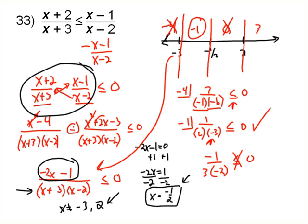And then we try 3. Negative 2 times 3 is negative 6. So you get negative 7 on top. 3 plus 3 is 6 on bottom. 3 minus 2 is 1 on bottom. So you've got a negative number there, which is less than 0. So that's good. So that region works as well.